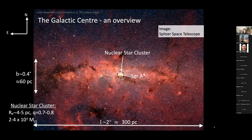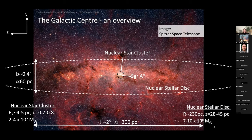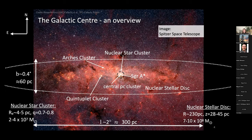The nuclear star cluster has a mass of roughly 30 million solar masses. It is not perfectly spherical — it is flattened with a minor-to-major axis ratio of 0.7 to 0.8. In the center is a radio source called Sagittarius A*, the supermassive black hole of our galaxy. Surrounding it, we have the nuclear stellar disk, with a radius of about 230 parsecs, a scale height of roughly 30 to 40 parsecs, and a mass of several times 10^8 solar masses. Within these main structures, we also have young star clusters — the Arches cluster, the Quintuplet, and the central parsec cluster of young stars, all with ages of a few million years.